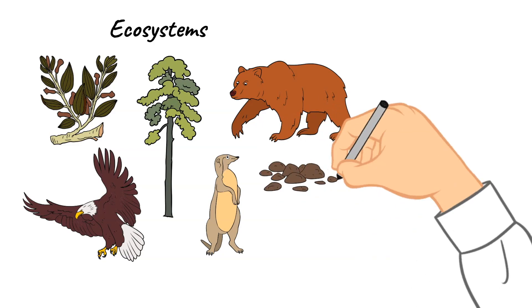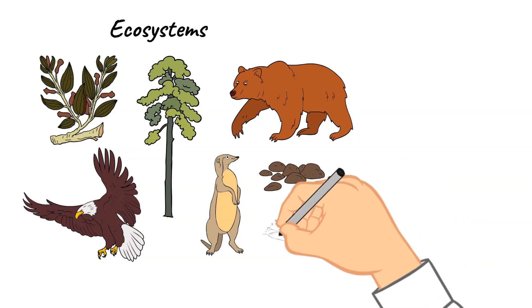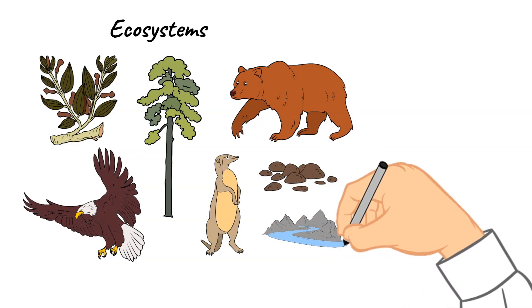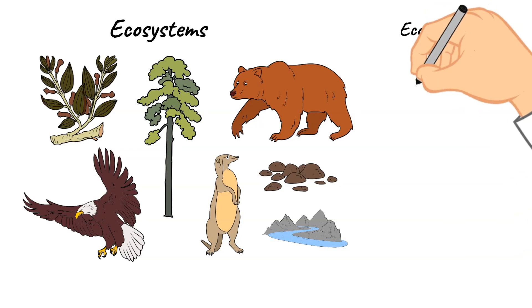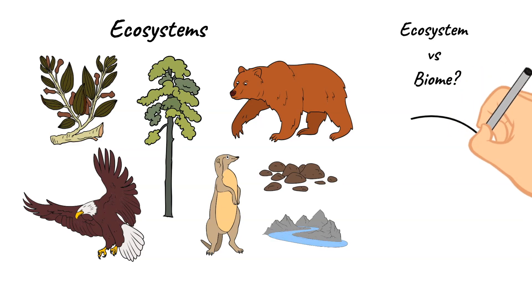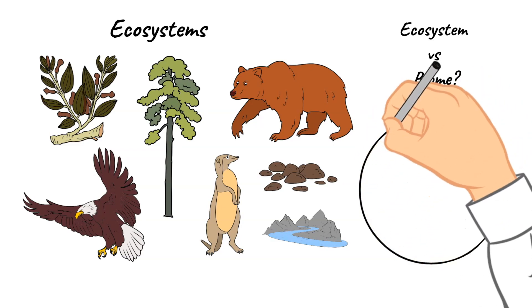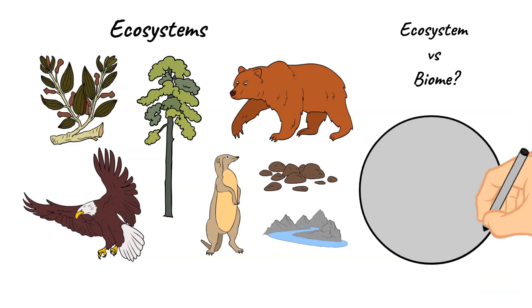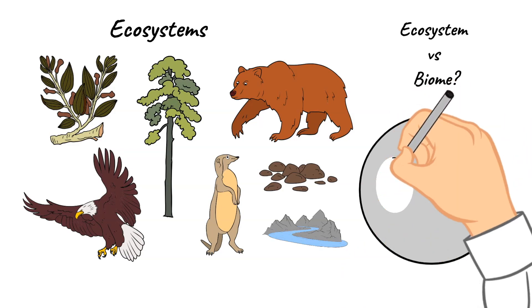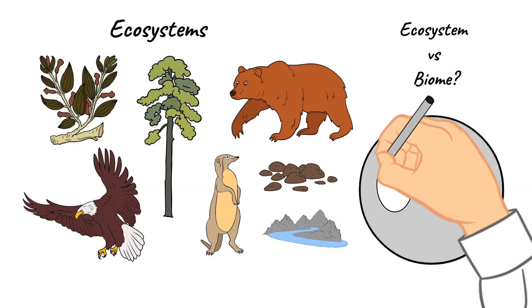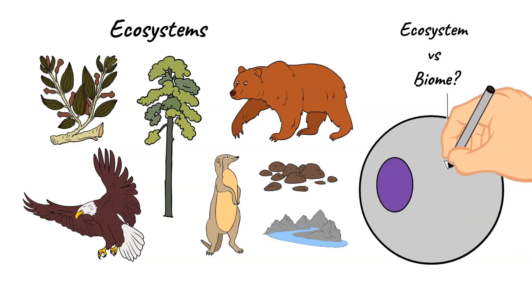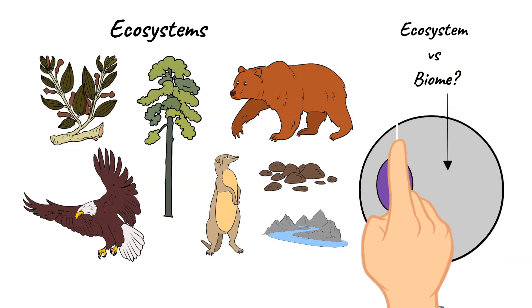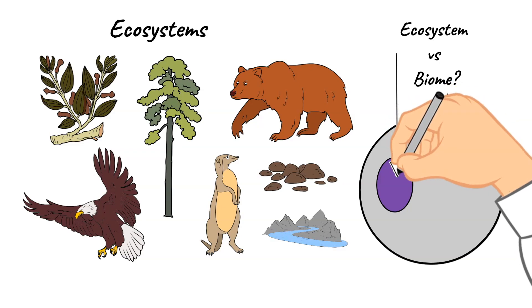Last week, we talked about biomes. You may be wondering, what is the difference between a biome and an ecosystem? A biome covers a large geographic area, whereas an ecosystem is a much smaller community of those living organisms that interact with their physical or non-living environment — like the rocks, soil, sand, and water — as well as the living things.